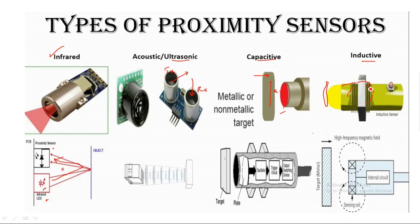The inductive proximity sensor works when any object comes nearer to the device, changing the inductance. A high-frequency magnetic field surrounds the inductive sensor, and when a target metal comes nearer, the magnetic field changes, altering the inductance. This is how the change is detected.